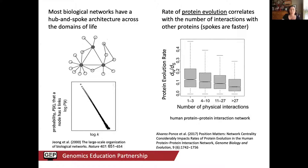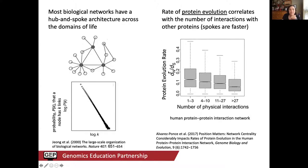There's also a correlation between the hubbiness of a gene and its rate of protein evolution. Looking specifically at the human protein-protein interaction network, the rate of evolution — on the y-axis — decreases as the number of physical interactions within the network increases. This pattern has been found in other systems and biological networks: protein evolution is related to the structure of the network.